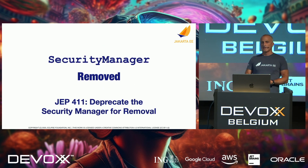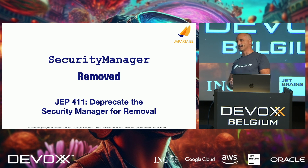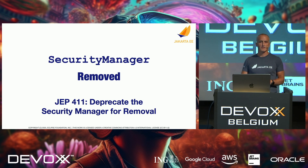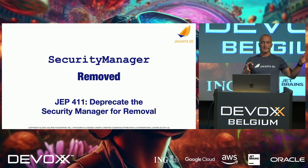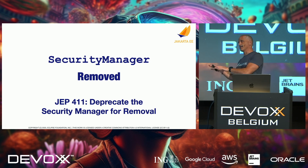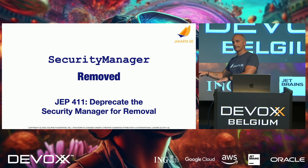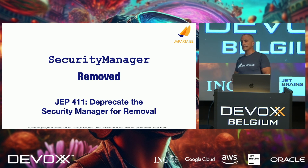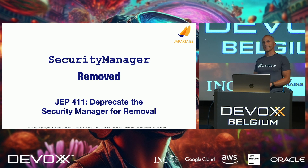The Security Manager is still deprecated in Java 21, so what we want to do is future-proof this and remove all references to Security Manager. Wherever we use Security Manager in the APIs, we'll remove it. That doesn't mean that applications or implementations cannot use it — it's still available in Java 21 — but we don't want to reference it from the specifications.